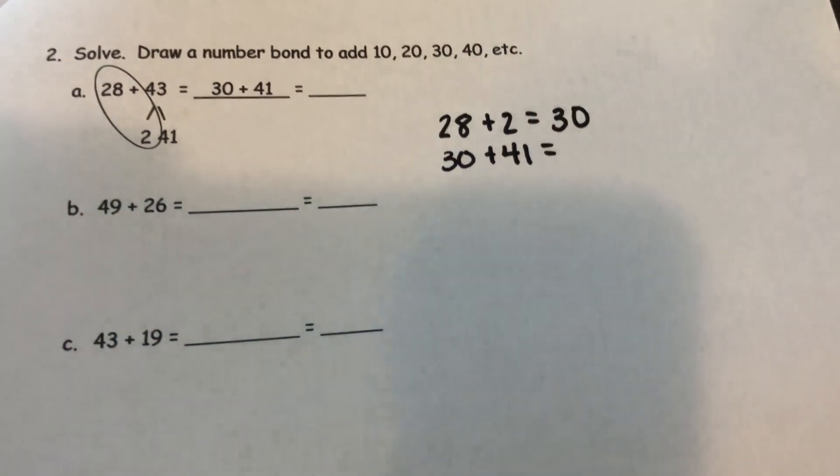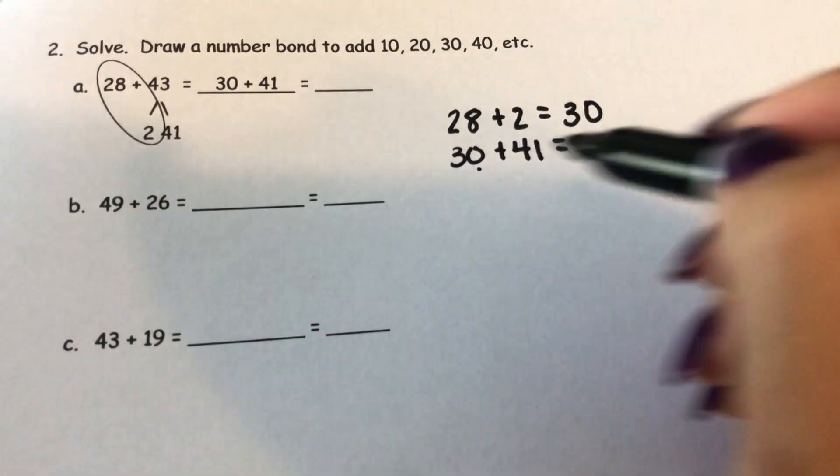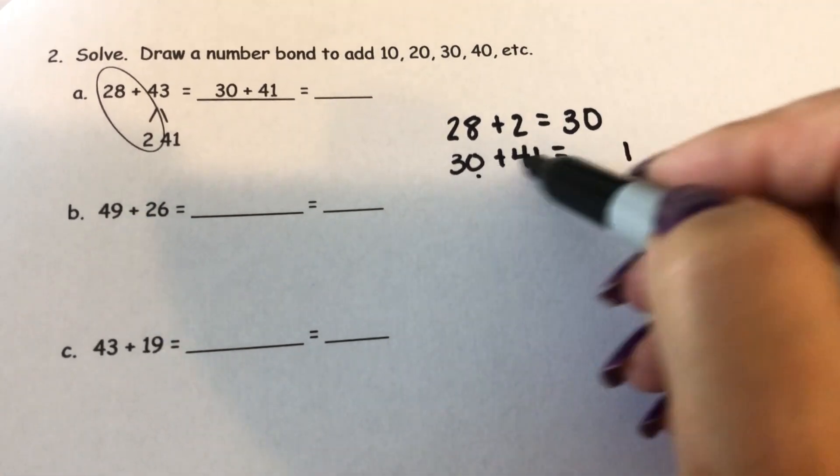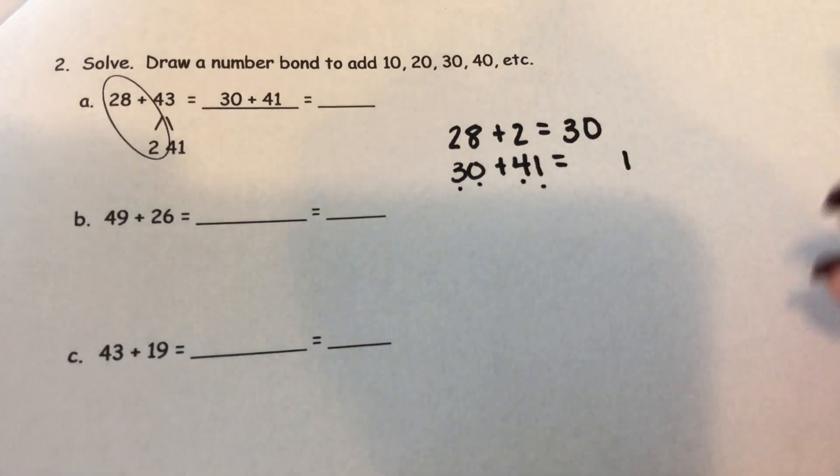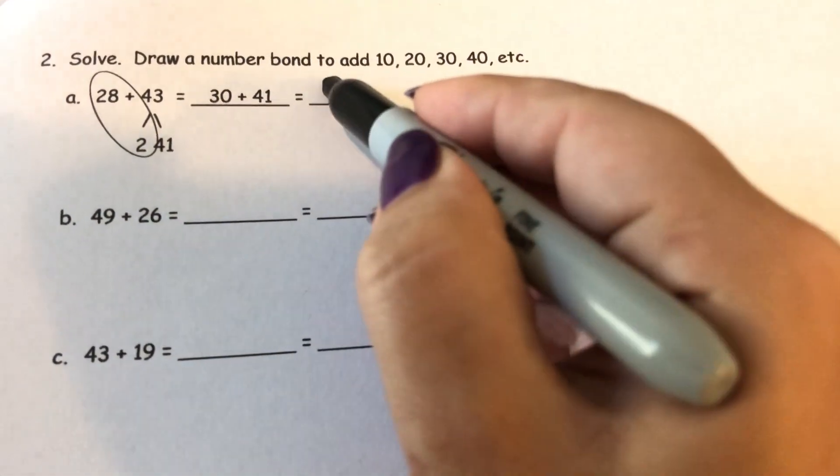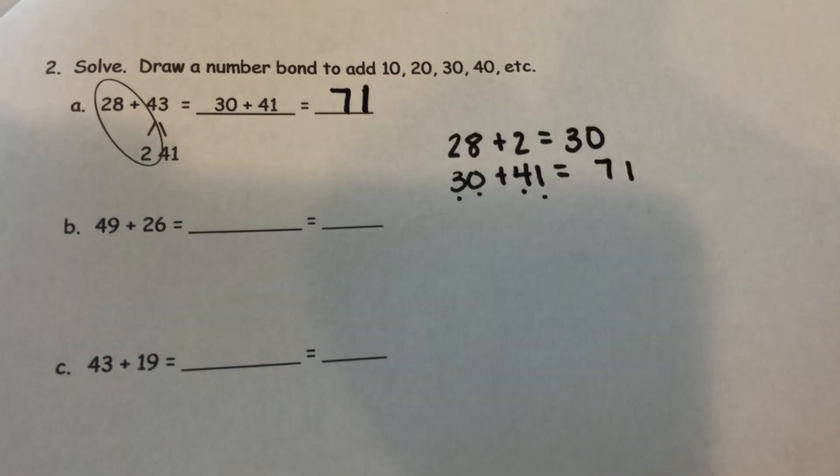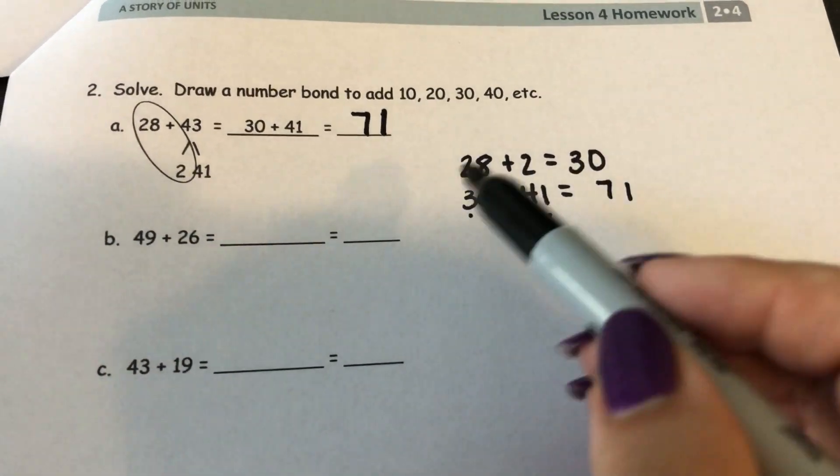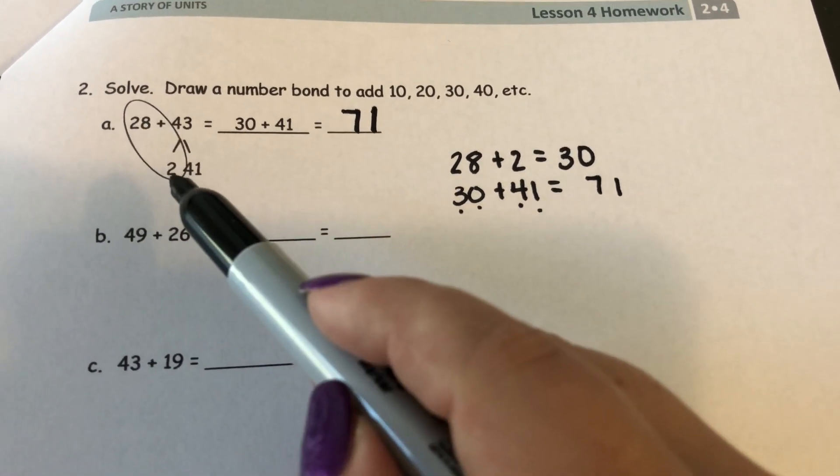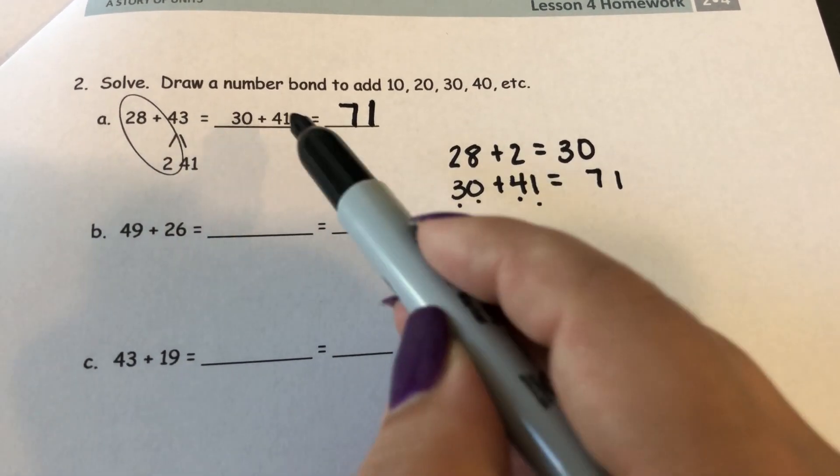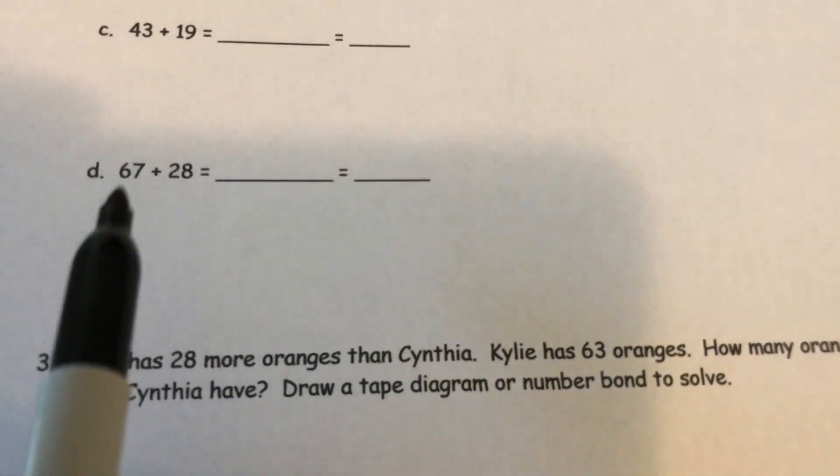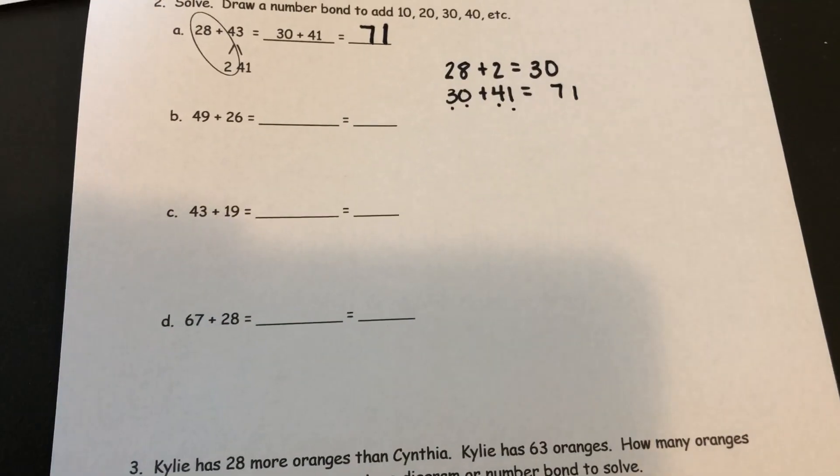So 30 plus 41, which is what they put right here. And now you can add like units. Well, 0 ones plus 1 one is 1 one, and 4 tens plus 3 tens is 7 tens to get the answer of 71. And you could draw these on the side if you want to, or you could just do the 28 plus 2 in your head is 30 and add the 41 on this line. So we can do this one together as well in that same strategy.